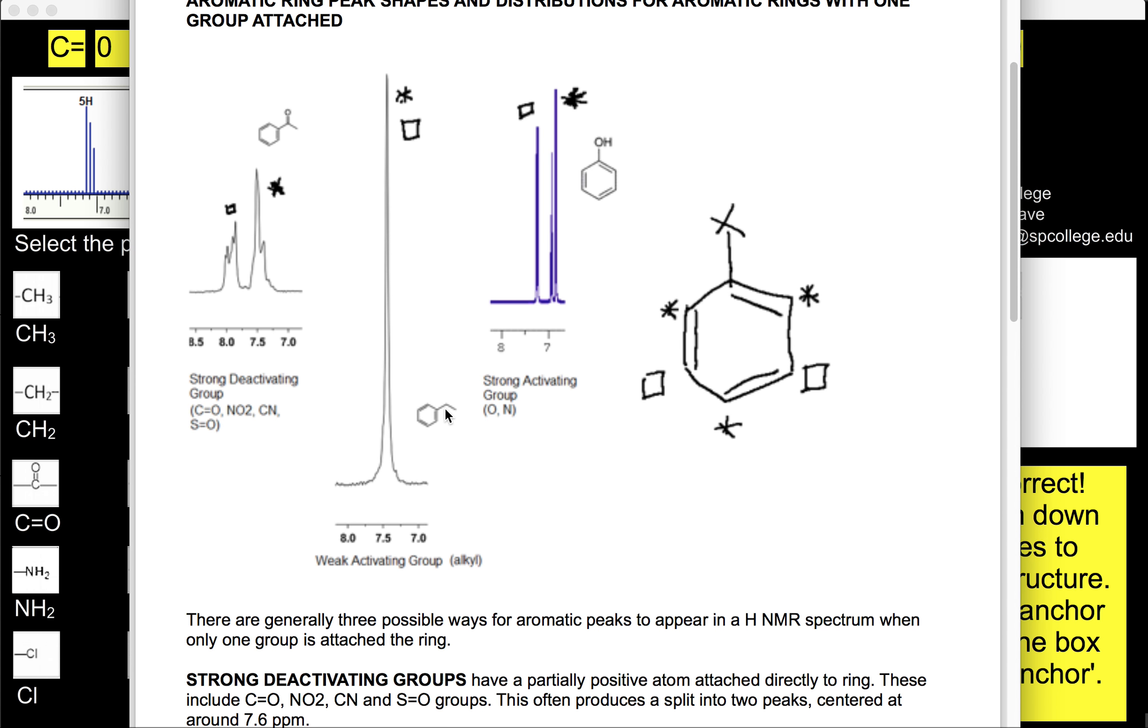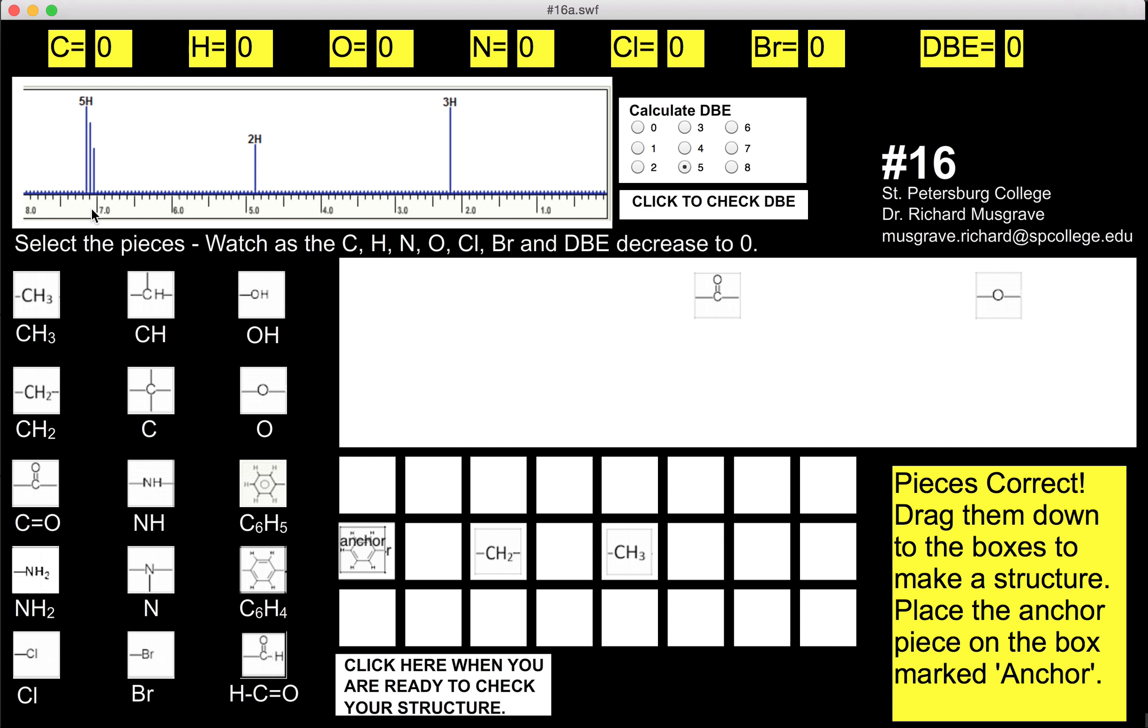But when you've got a carbon group connected to the aromatic ring, like an alkyl group connected to the aromatic ring, it's usually a single grouping of peaks between 7 and 7.5 ppm. And that's the situation we have here, suggesting that we have the CH2 group directly connected to the aromatic ring.